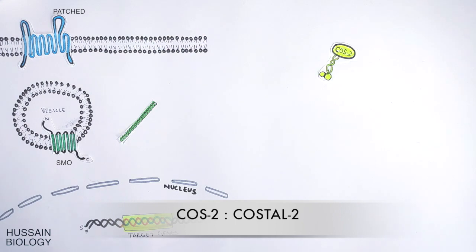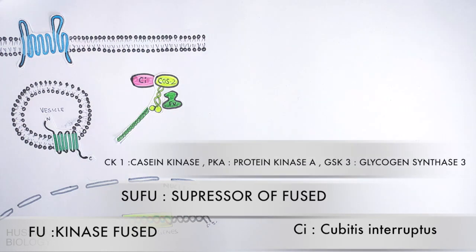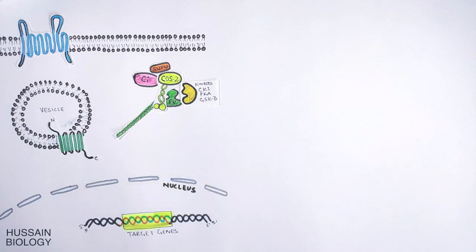To the microtubules, Cos2 protein is attached, and then this Cos2 protein binds multiple proteins like Fu protein, Ci protein, Sufu protein, and kinases like CK1, PKA, and GSK3. All these proteins form a complex that remains bound to the microtubules by the help of Cos2 protein.